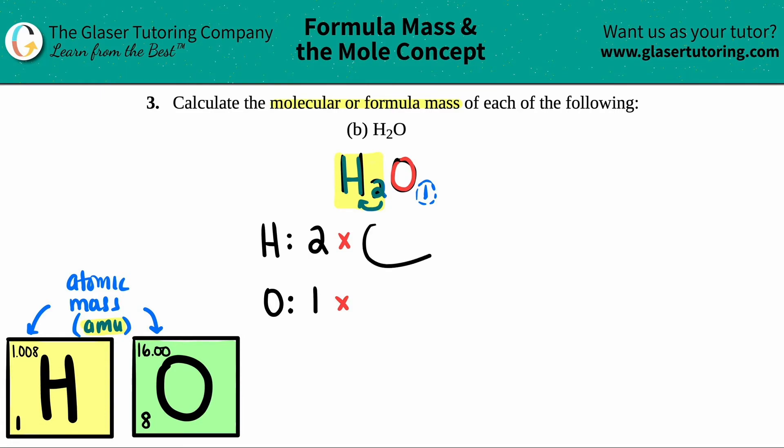All right, so now let's just multiply these. For hydrogen, I'm going to multiply the two total by 1.008 amu. And then for the oxygen, I'm just going to multiply my one by 16.00 amu. Okay, so obviously one times 16 is 16. So I have a total of 16 amu for oxygen and I have a total of 2.016 amu for hydrogen.